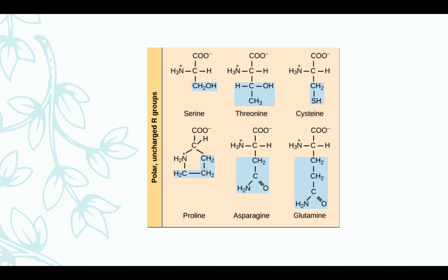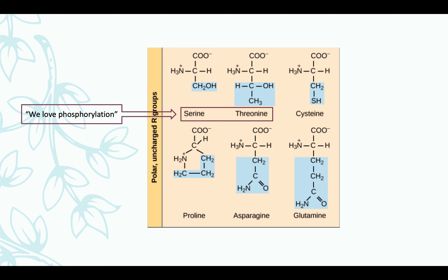Now let's look at some of your polar R-groups. Serine and threonine are known for loving phosphorylation — also included here is your tyrosine. Why? Because they are nucleophilic due to the presence of a hydroxyl group (OH). Protein phosphorylation is a reversible post-translational modification in which your amino acid residue is phosphorylated by a protein kinase. We'll discuss that further as we go along.